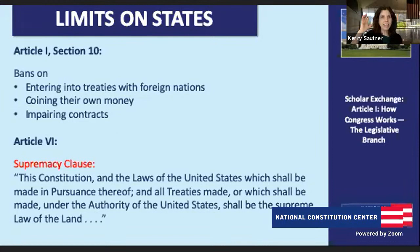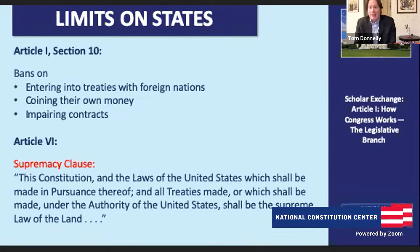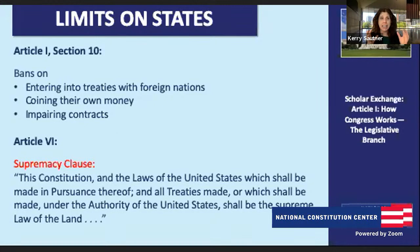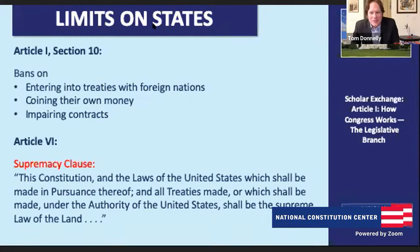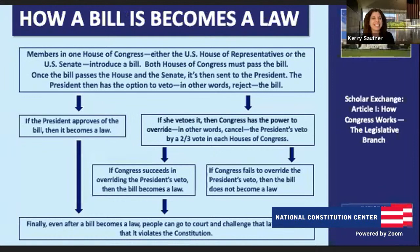Congress could pass a law and claim it's a supreme national law, but states could sue and argue Congress doesn't have the power, which could strike it down — and that's happened throughout American history. What I want to dive into next is how a bill becomes a law, since that's the primary role of Congress. It's tricky — slow, slightly painful, difficult — and that's the way it's supposed to be. Madison liked to use the word 'complicated.' If you make people really work for it, you get something better at the end. Sometimes making it hard makes it better.